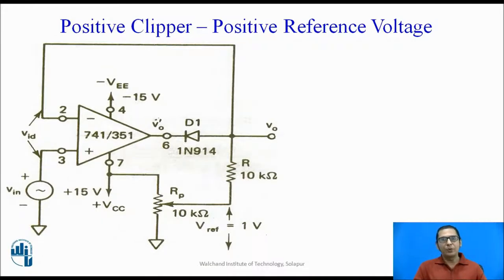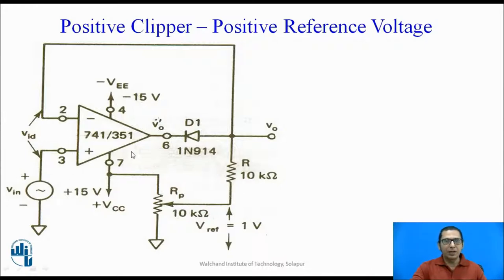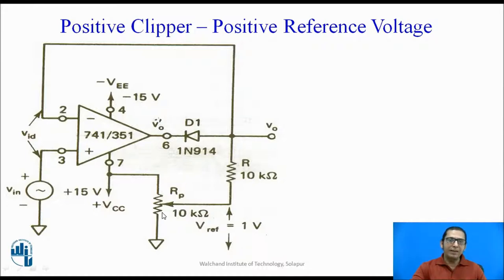This positive clipper — the reference voltage applied to it can be a positive reference voltage or a negative reference voltage. Let us look at the first circuit: a positive clipper with a positive reference voltage. As we can see, the positive clipper circuit is formed using an operational amplifier with a diode in the feedback path. The reference voltage is one volt. Since this reference voltage is positive, it can be easily derived by using a potentiometer from the same positive power supply used for the op-amp, with Rp adjusted so that the reference voltage equals one volt.